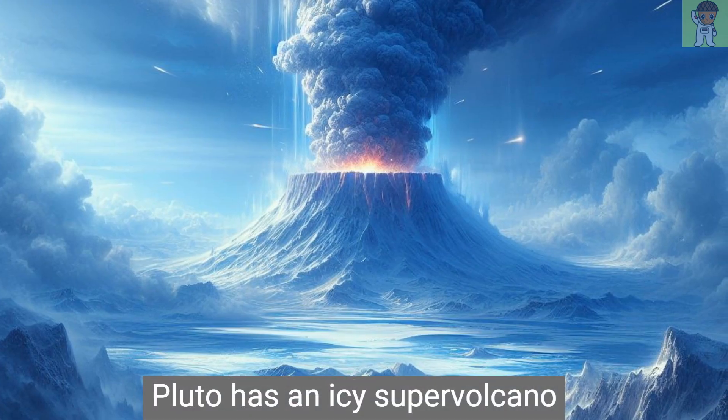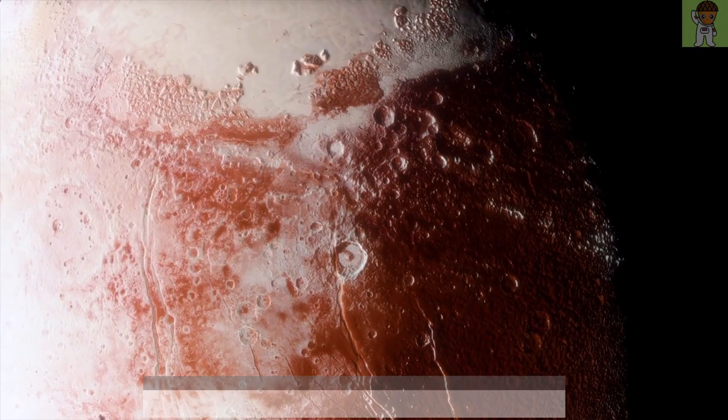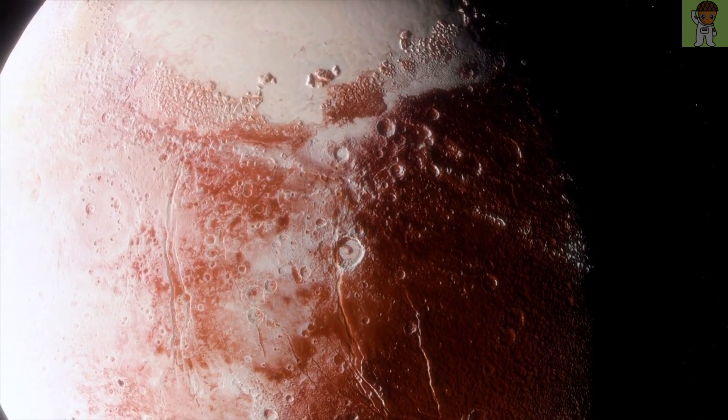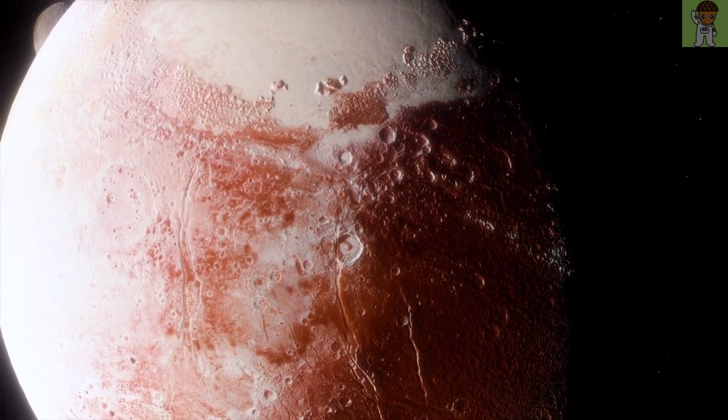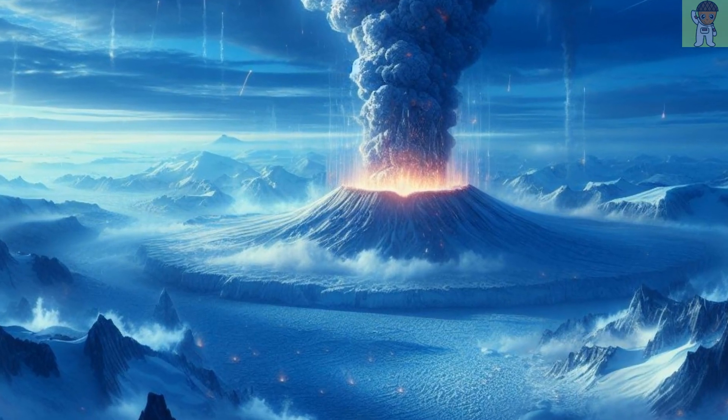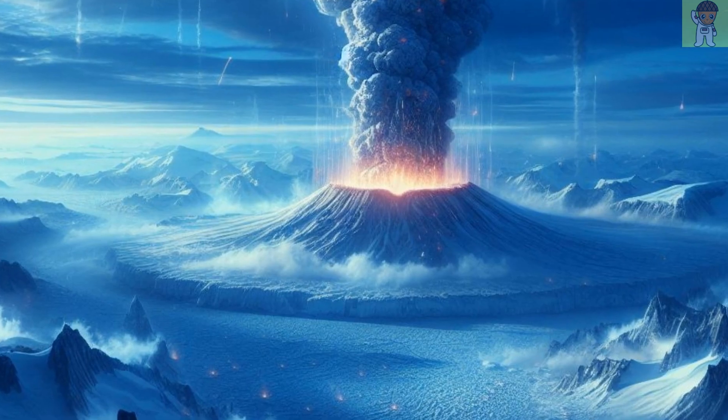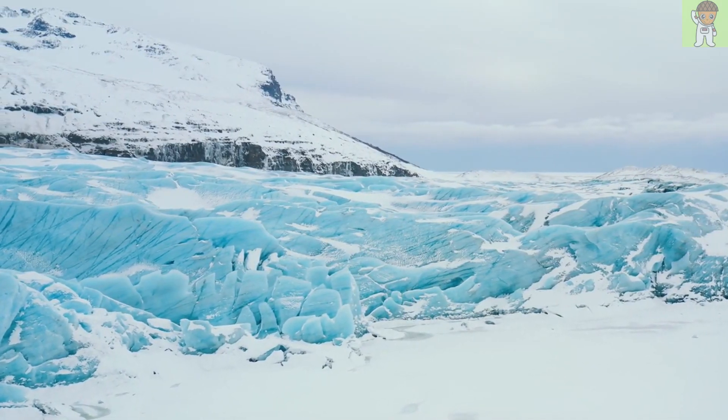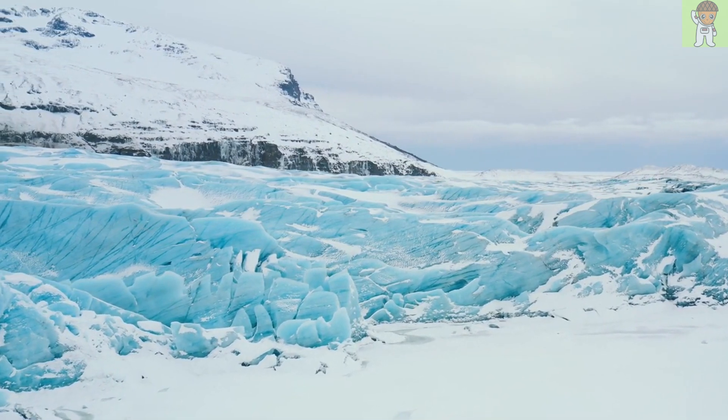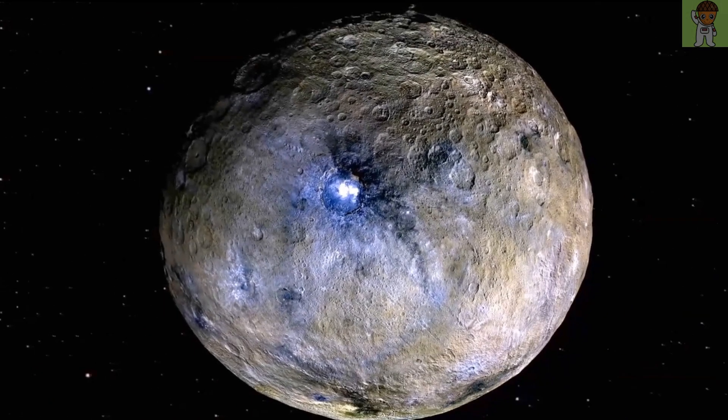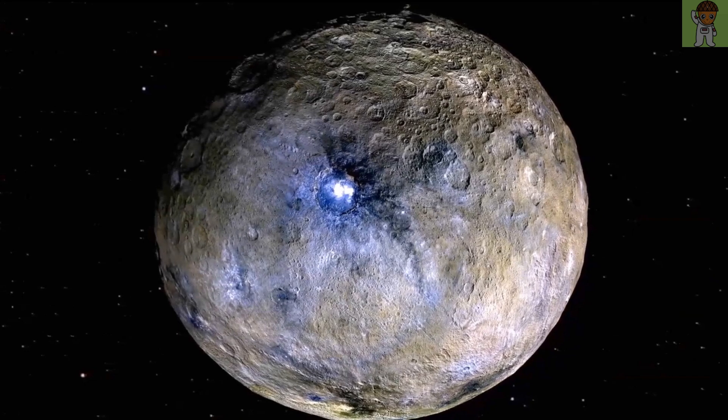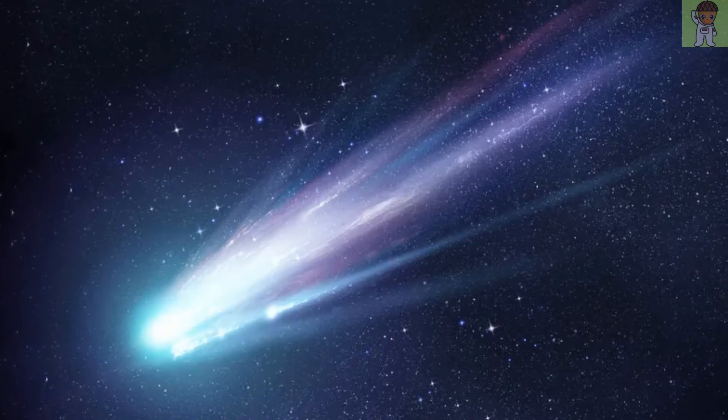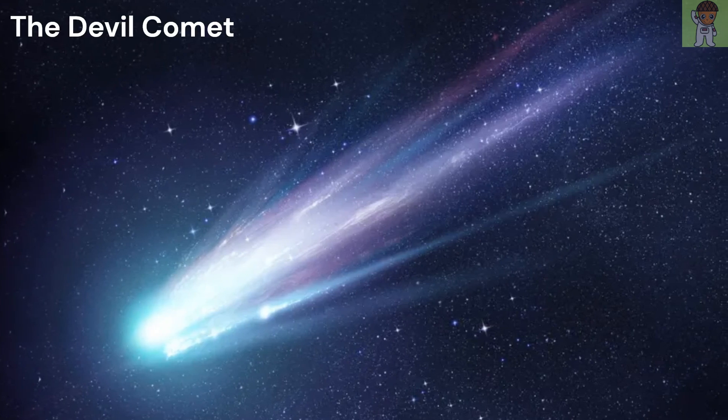Pluto has an icy supervolcano. Demoted planet Pluto has been hiding a gigantic cryovolcano the size of Yellowstone's supervolcano, a study revealed. Cryovolcanoes, also known as ice volcanoes, are simply volcanoes that erupt with cryomagma, ice, water, and various gases, instead of molten rock. They've been found in several places across the solar system, including the dwarf planet Ceres, and at the heart of explosive comets, such as the Devil Comet.